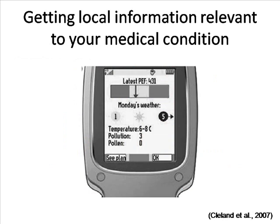There are services that provide relevant information for your health condition. For example, here is a service for asthma patients. Environmental conditions that may impact the patient's physical activity, such as pollen and pollution, are delivered directly to the cell phone.